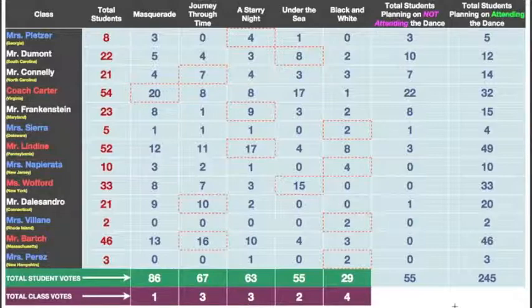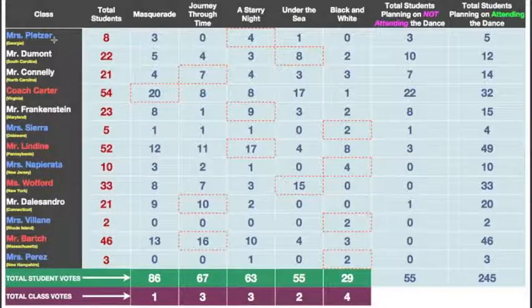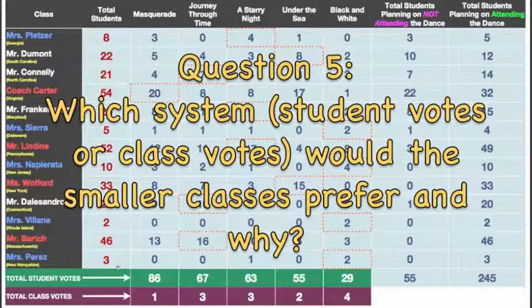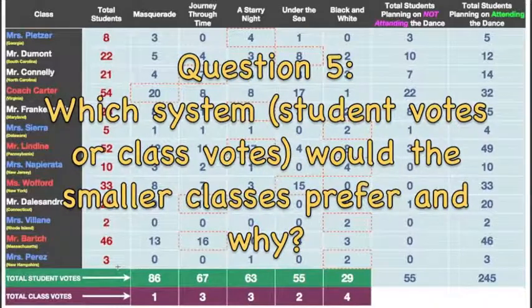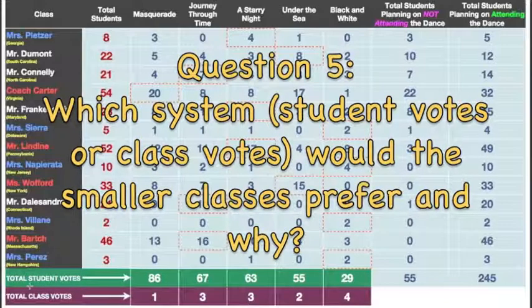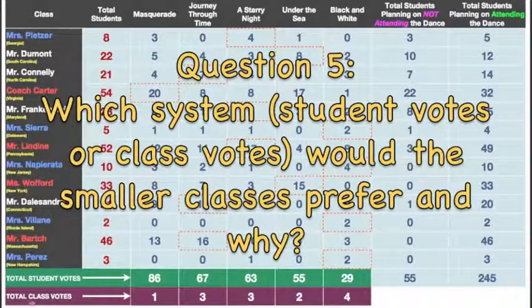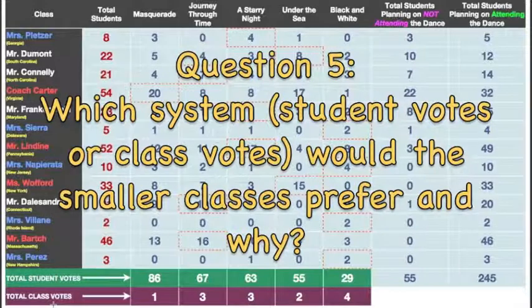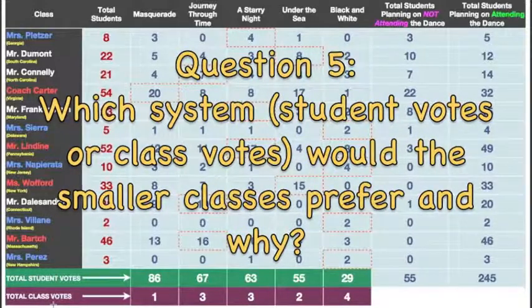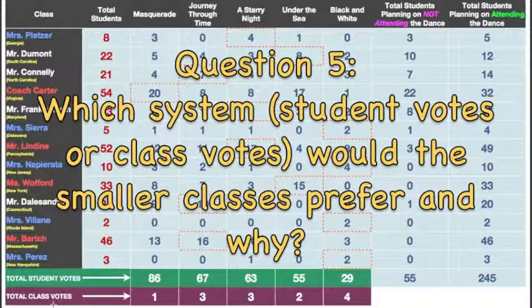There's one last thing we want to take a look at, and that's population. If you look at the teachers in blue font — Ms. Perez, Ms. Villain, Ms. Naparata, Ms. Sierra, and Ms. Pletzer — you'll notice these are the teachers that have 10 or less students. Ms. Pletzer has 8, Ms. Sierra has 5, Ms. Naparata has 10, Ms. Villain has 2, and Ms. Perez only has 3. Which system would these teachers who have 10 or less students prefer most — a system that counts total student votes, or a system that counts total class votes? There's a system in which they are more powerful. In a complete sentence, write down which system you think they would prefer and why. Pause.